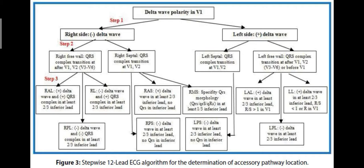For left free wall pathway, determine whether it is left anterolateral or left lateral. Left lateral will have an R/S ratio in V1 less than one. For anterior pathways, the inferior leads are positive — inferior leads are negative only in posterior pathways. If R/S ratio in V1 is more than one (more prominent RBBB), it is left anterior lateral because the anterior lead is prominent. If it is lesser RBBB morphology, you are dealing with a left lateral pathway.